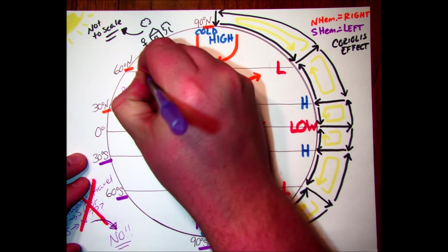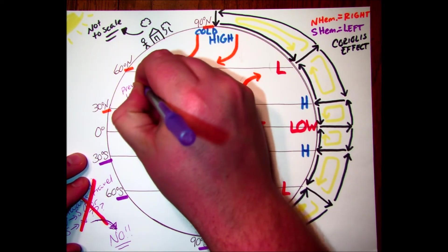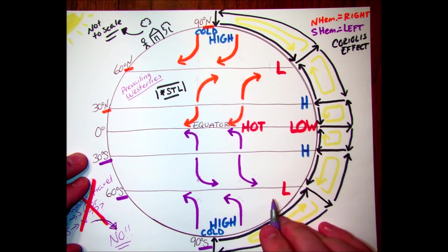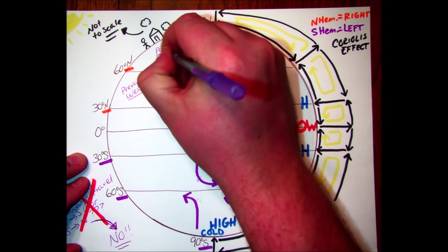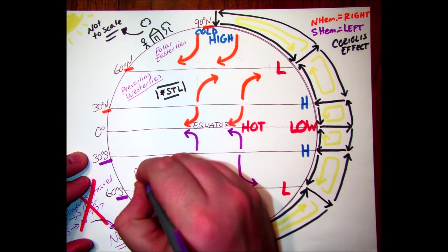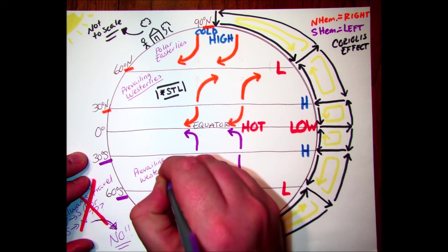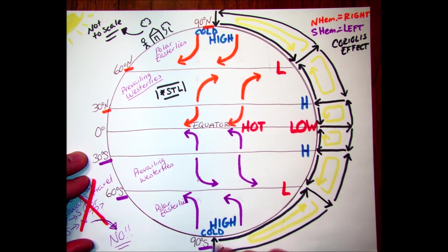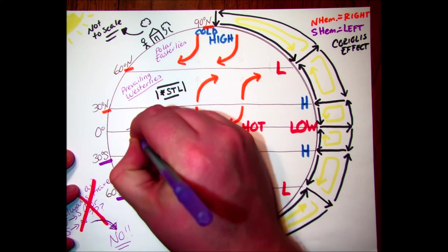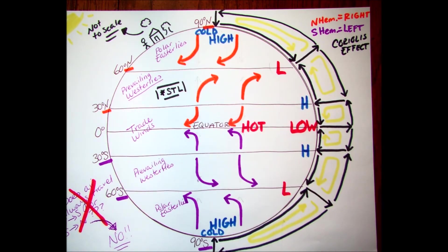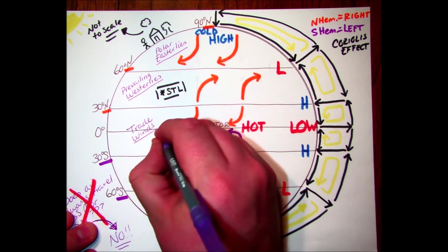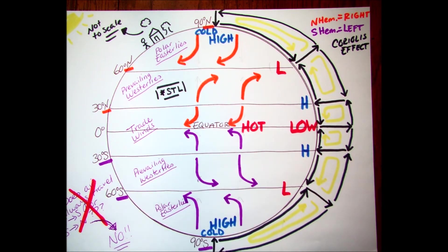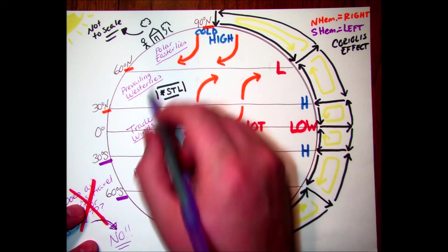St. Louis sits in between where air travels from south to north but then gets deflected from the west to the east — we call those the prevailing westerlies. At the poles we call those winds the polar easterlies. And in between, from the equator to 30 degrees north and south, those are the trade winds.